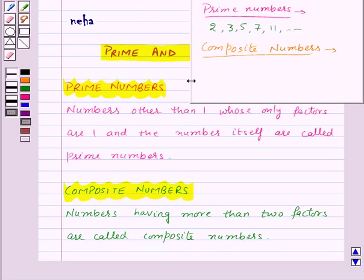For example, numbers like 4, 6, 8, 9, 10, etc. are all composite numbers as they have more than two factors.